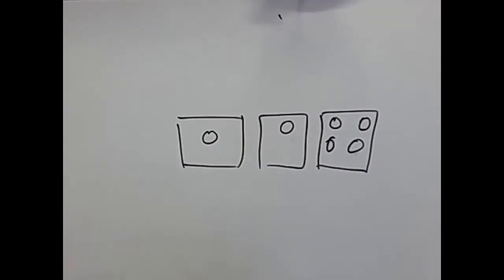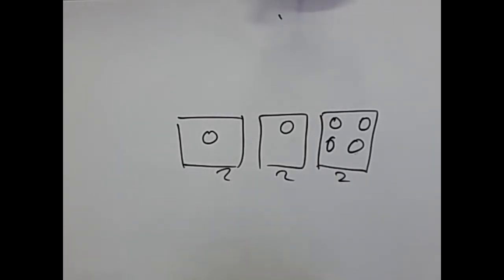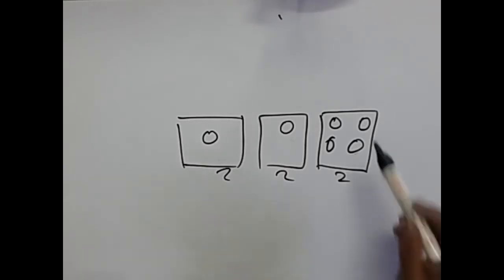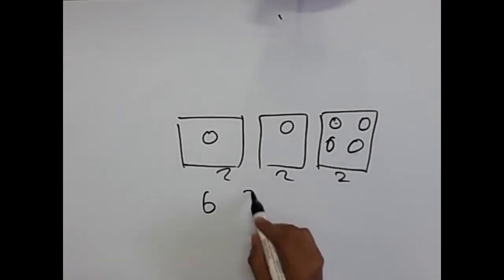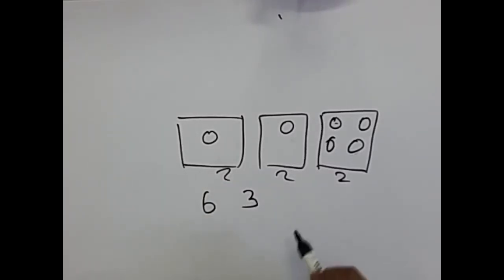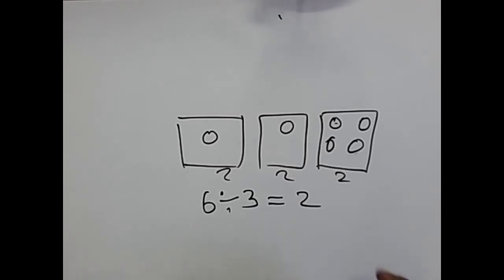Now we have to crack the algorithm and logic for this problem. After equalizing, we get 2 candies in each and every box. What is the link between this number 2 and the total number of candies? Total number of candies is 6, and total number of boxes is 3. After division the number becomes 2. So the link is: 6 divided by 3 equals 2. We always have to find the average — the sum of all candies divided by the total number of boxes.